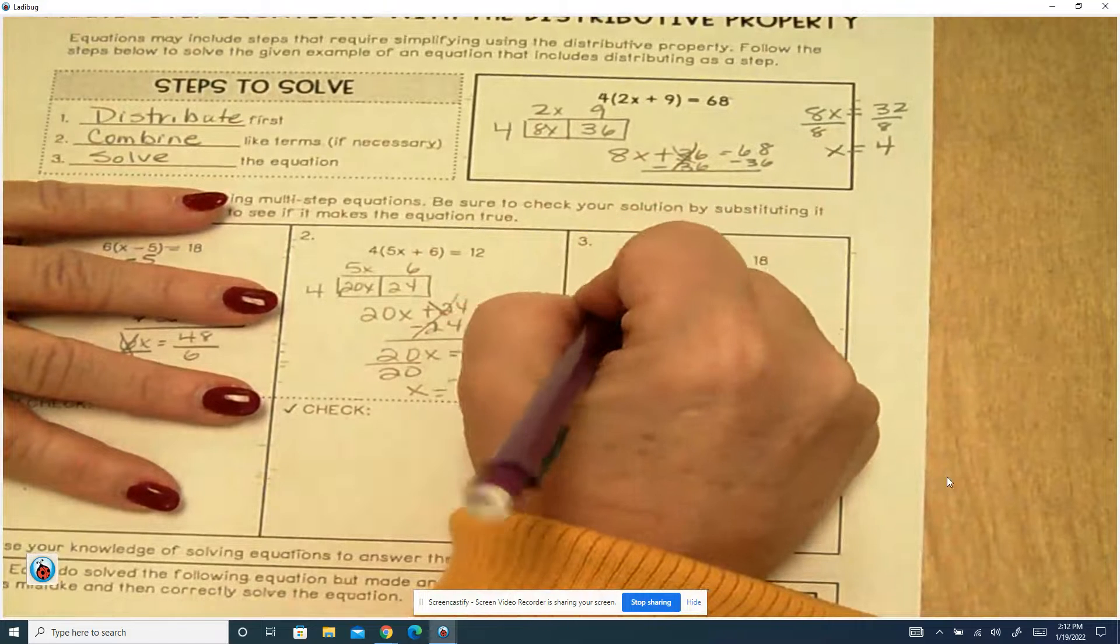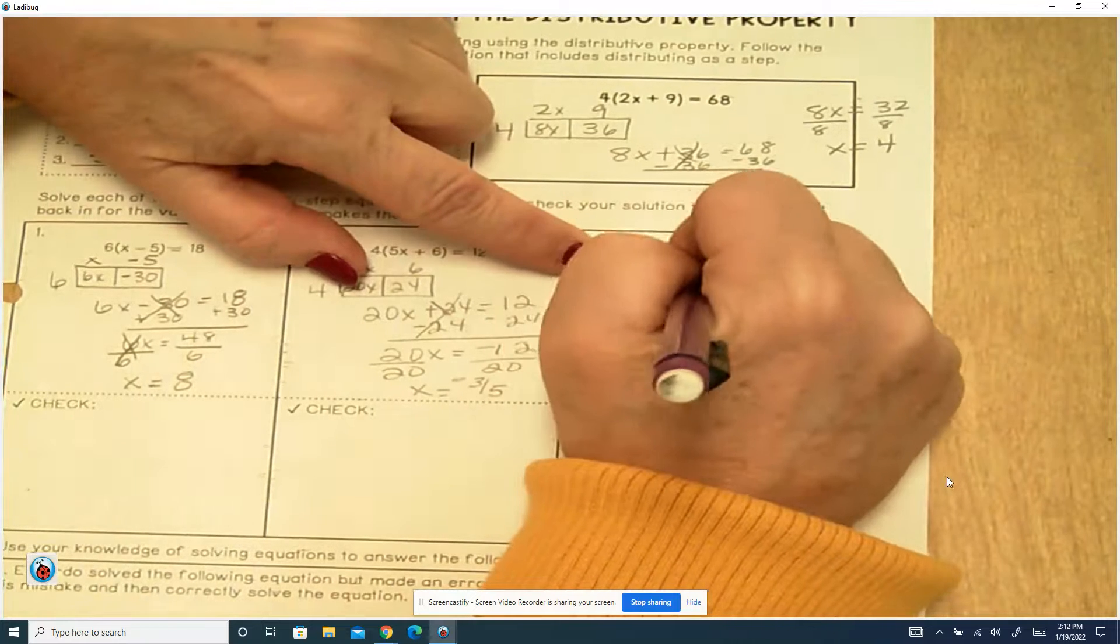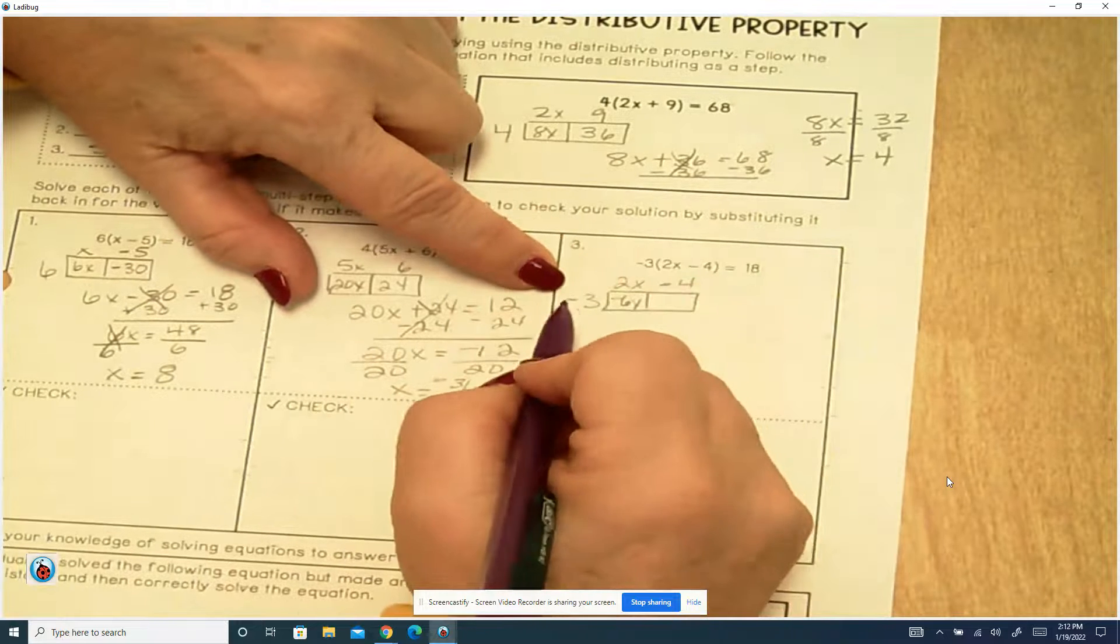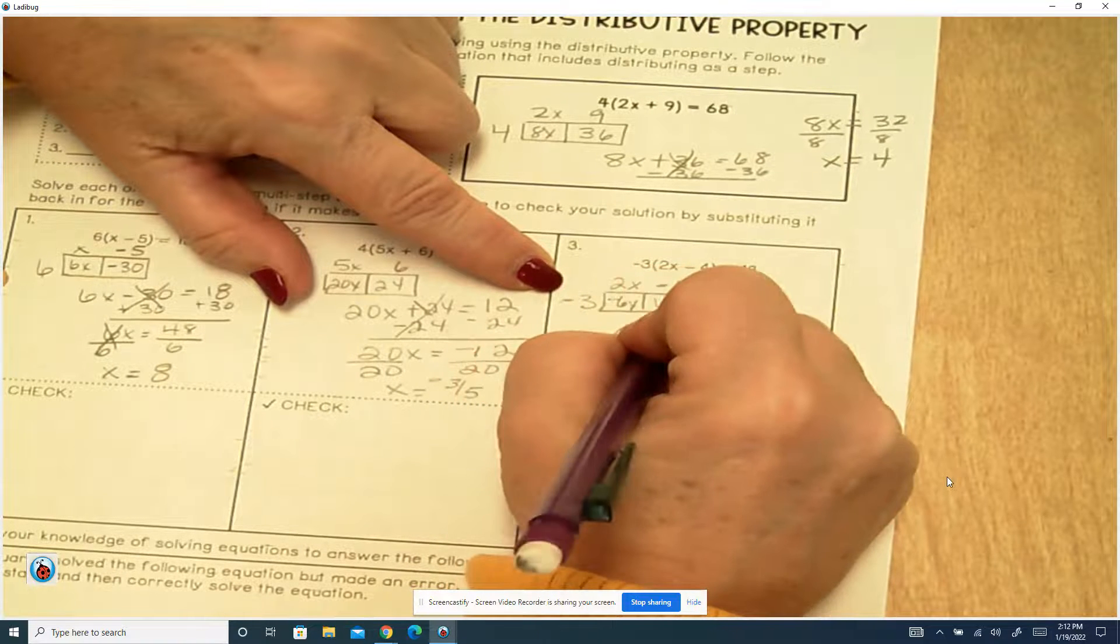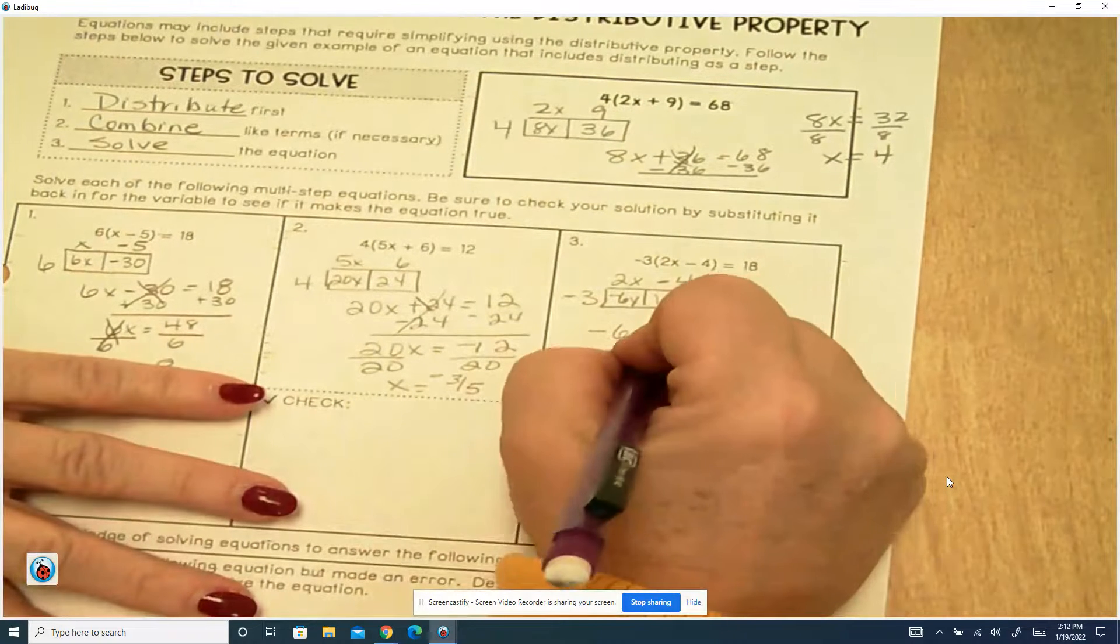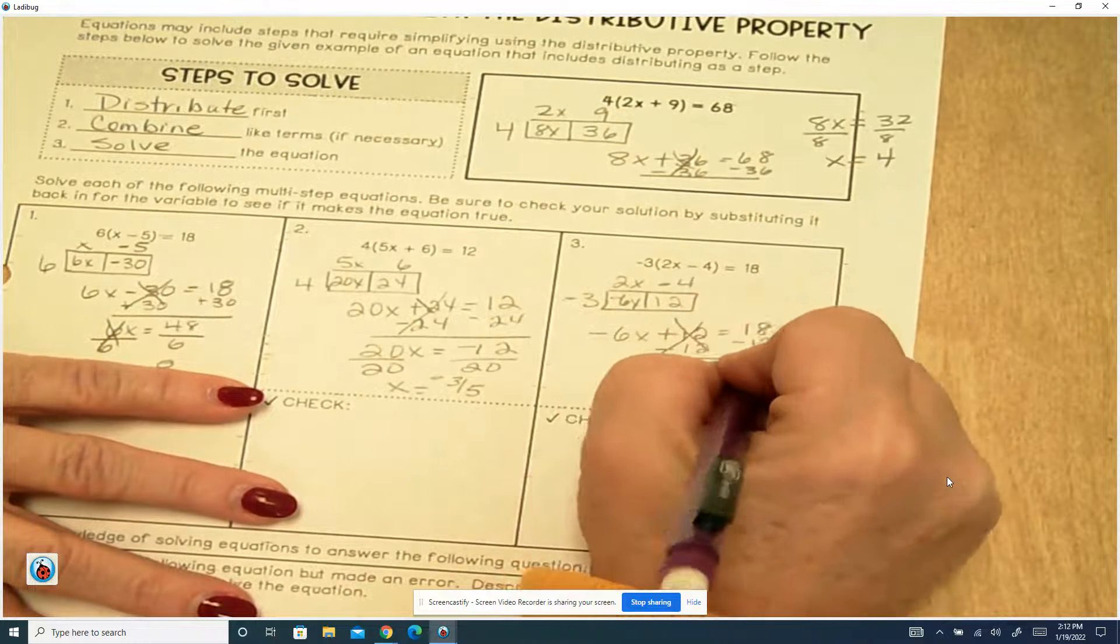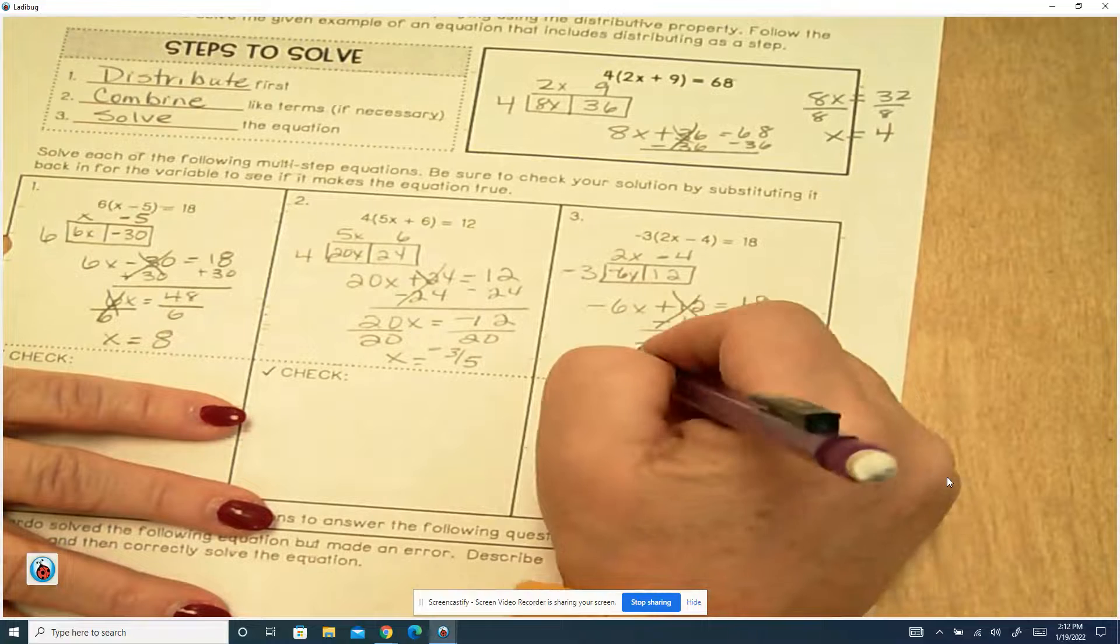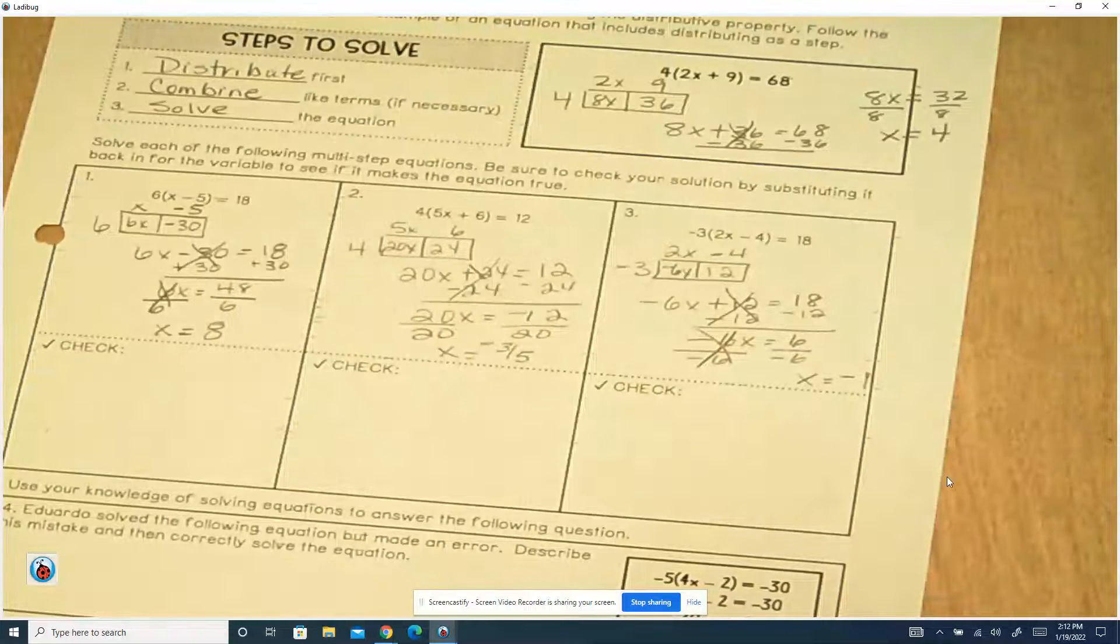And here we've got a negative on the outside of the box and a negative on the inside. So we've got 2x and then a minus 4. A negative 3 times 2x is a negative 6x. And a negative 3 times a negative 4 is 12. So we would bring that down as negative 6x plus 12 equals 18 minus 12 from both sides. That cancels out. Got a negative 6x equals 6. Divide by a negative 6 on both sides. This cancels out. x equals a negative 1. A positive divided by a negative is a negative.